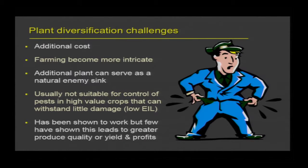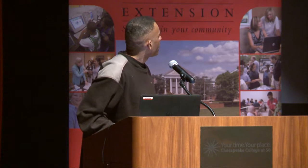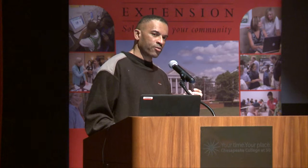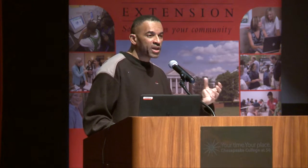But there are some challenges associated with this tactic. One is additional costs, because now you're growing another plant besides your cash crop. Farming becomes more intricate — a little bit more tricky because you're trying to take care of two or three different plant species versus just the cash crop itself. Also, this strategy of using plant diversification reduces pest population but it doesn't eliminate them. So if you have a very sensitive crop that can only handle a low level of pest pressure, this may not be the appropriate tactic.